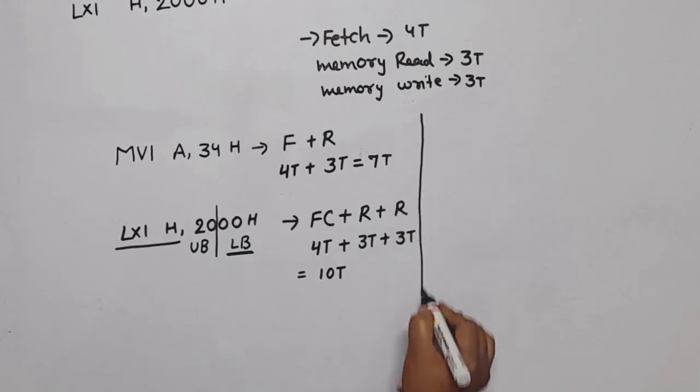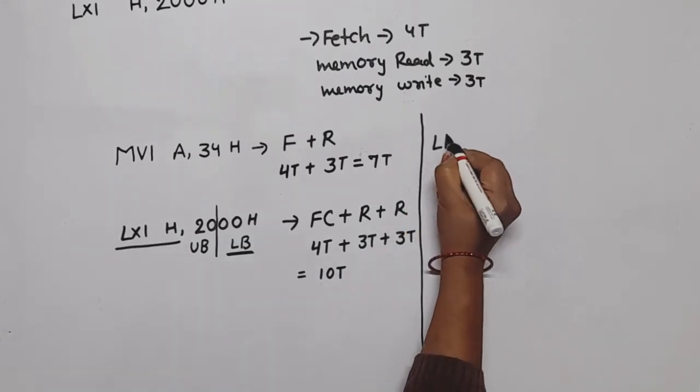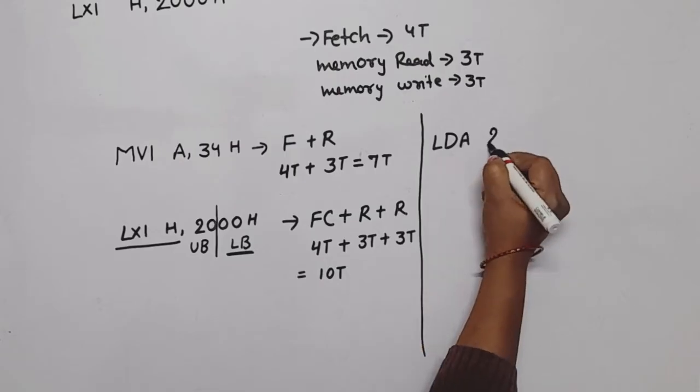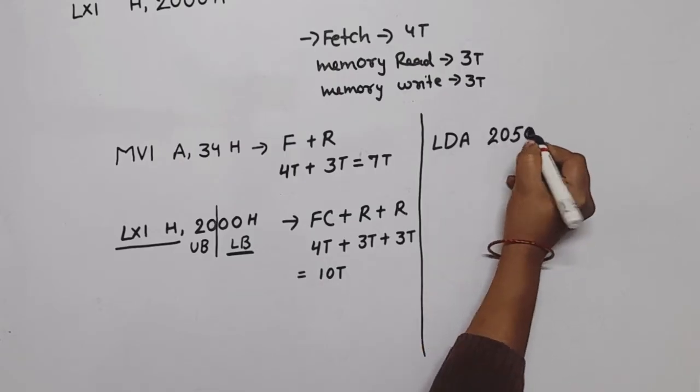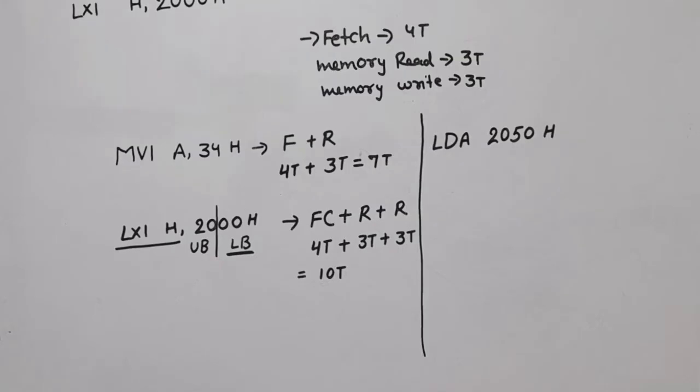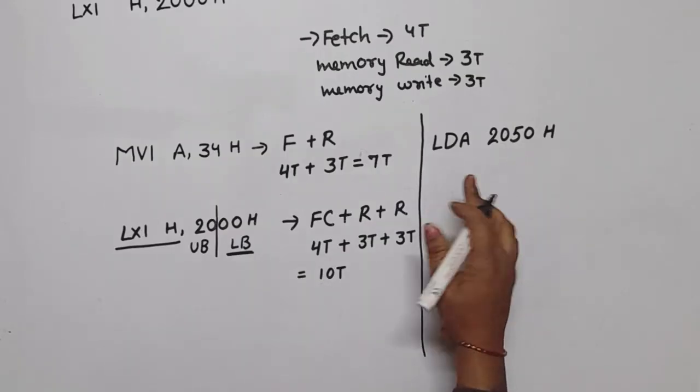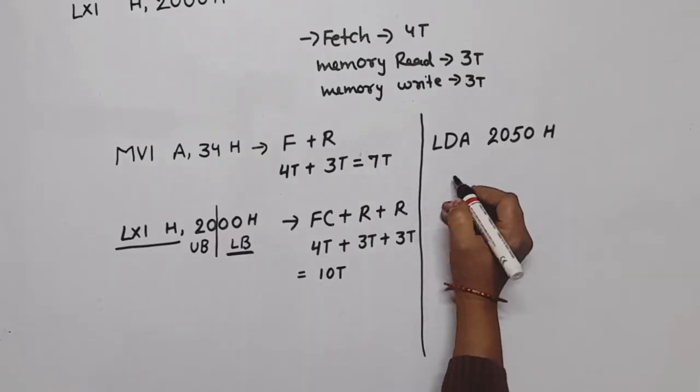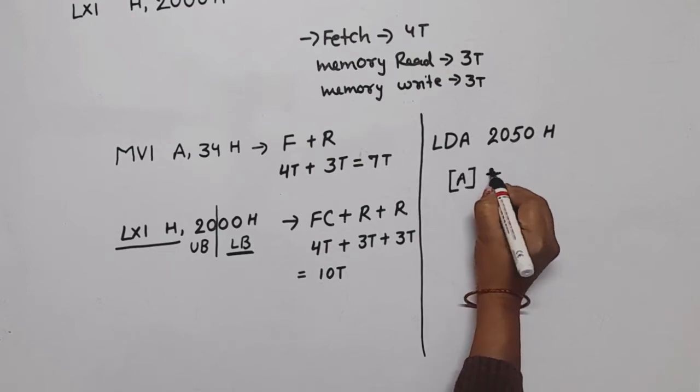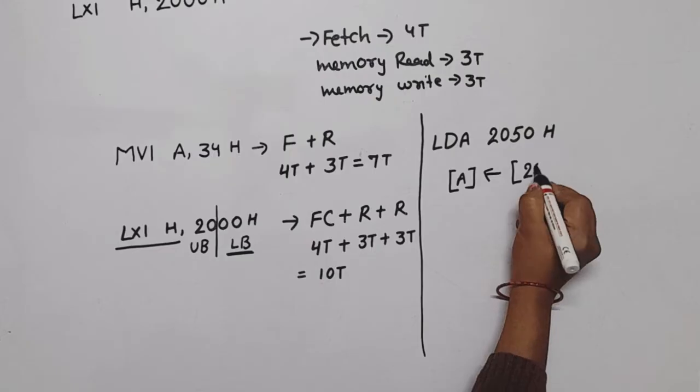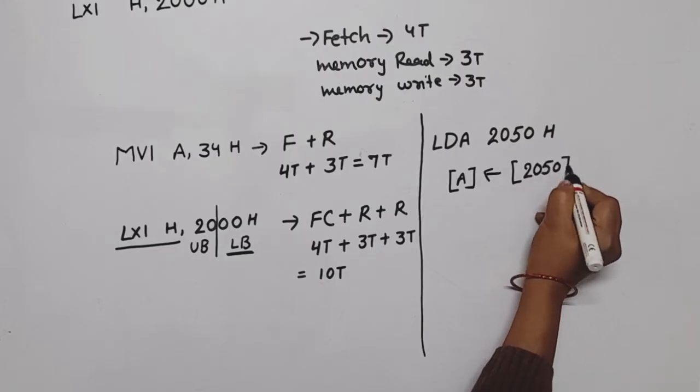These are the examples which were in the exam. Now one more example: LDA 2050H. So first we need to know what is the meaning of LDA. LDA means load accumulator with the content of this location. Means when this instruction is executed, what will load the accumulator? The content of the accumulator will come from memory location 2050H.